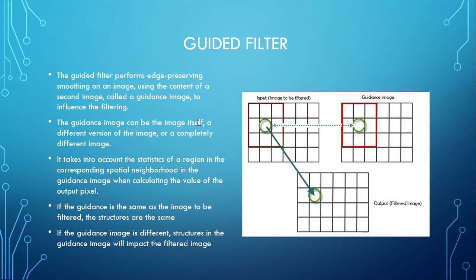The guided filter performs edge-preserving smoothing of an image using the content of a second image called the guidance image. The guidance image can be the image itself, a different version of the image, or a completely different image. It takes into account the statistics of a region in the corresponding spatial neighborhood in the guidance image when calculating the output pixel value. If the guidance is the same as the image to be filtered, the structures are the same; but if different, the structures in the guidance image will impact the filtered output.